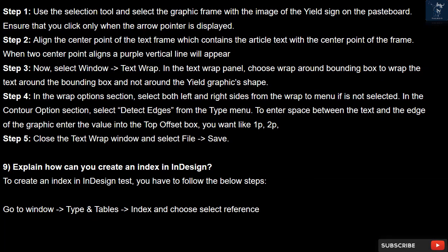Step 4: In the Wrap Options section, select both left and right sides from the Wrap To menu if not already selected. In the Contour Options section, select Detect Edges from the Type menu. To enter space between the text and the edge of the graphic, enter a value into the Top Offset box, such as 1p or 2p. Step 5: Close the Text Wrap window and select File > Save.